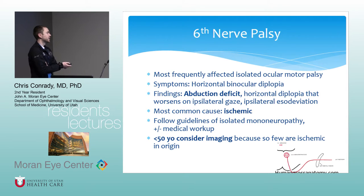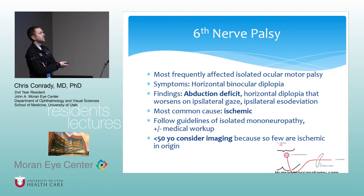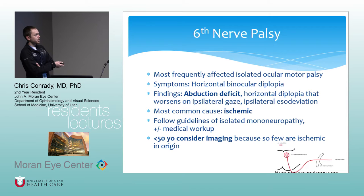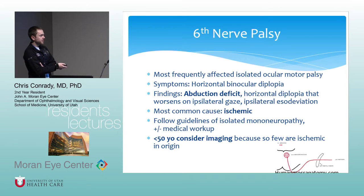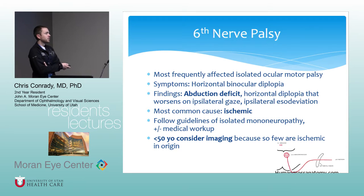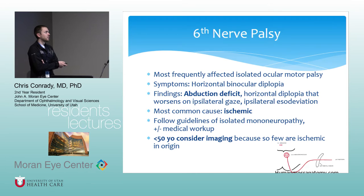Sixth nerve palsy is the most frequently affected isolated ocular motor palsy. It causes horizontal binocular diplopia, an abduction deficit, and horizontal diplopia that worsens in gaze toward the same side. You can also get an ipsilateral esotropia at distance. Most common cause in the right age setting is ischemic. If the presentation fits an isolated mononeuropathy profile you can call it ischemic; otherwise do a medical workup. The BCSC advises that anyone under 50 doesn't really fit an ischemic profile, so you should consider imaging.